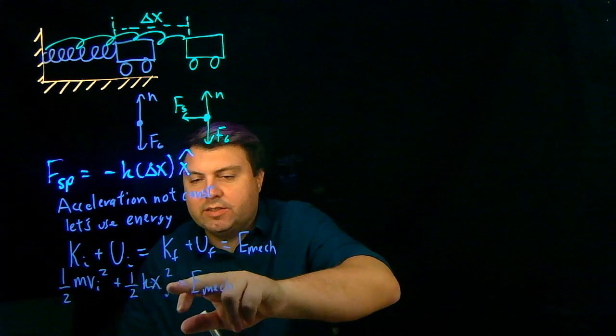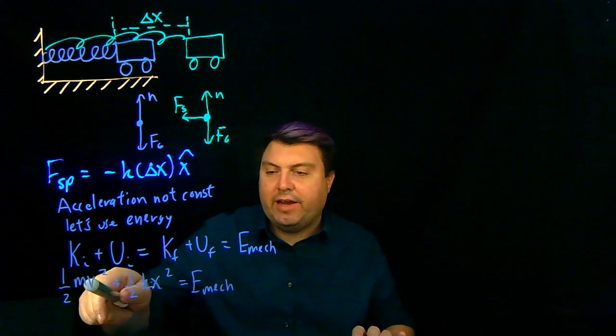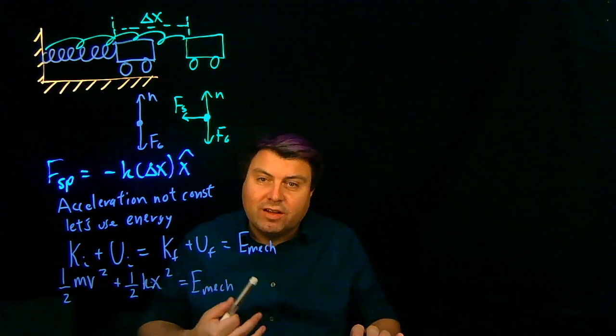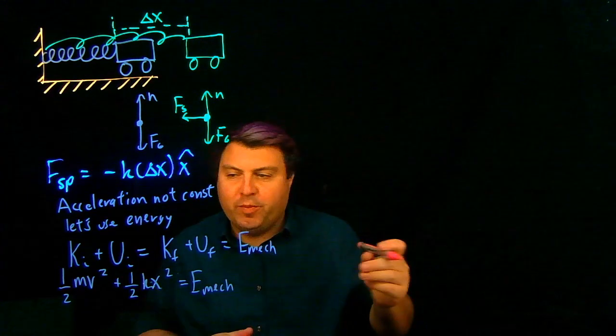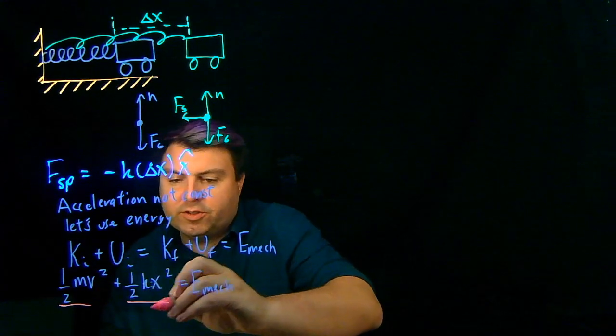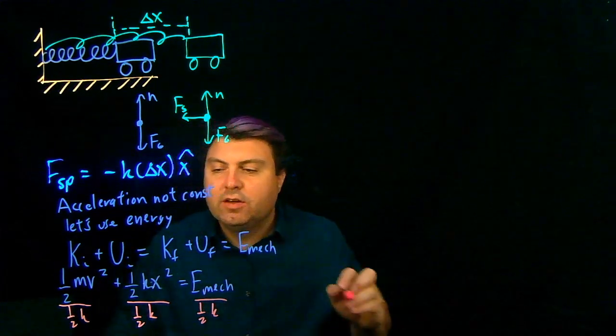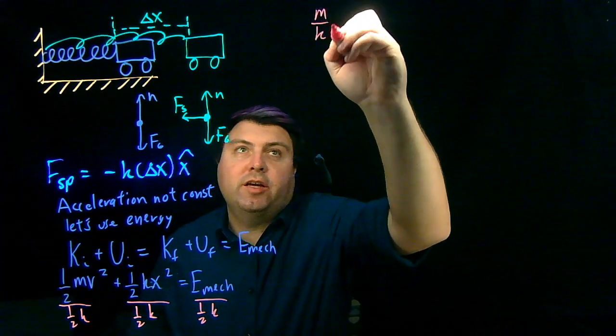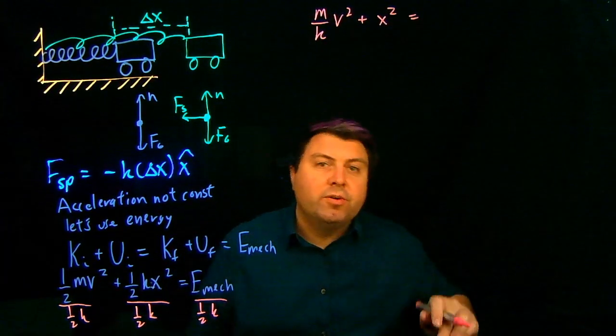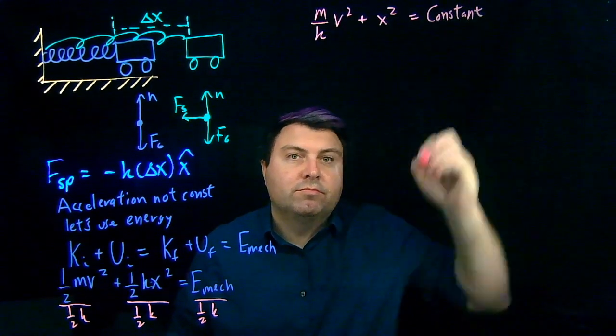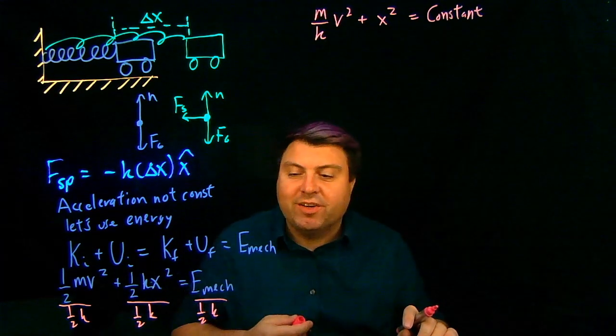So at any given point, in fact, we can even erase these little i's, and just say at any point, for x and for v, that we have this relationship here. Well, that helps quite a bit. But what we can do is we can do a little bit of division to help us out to kind of make this seem a little bit easier to approach. If I divide by one half k for all of these, then what I get is I get m over k v squared plus x squared is equal to some constant. We had it to be the mechanical energy, now it's mechanical energy divided by one half k. We don't really need to care too much about it.